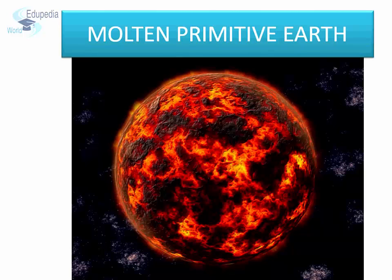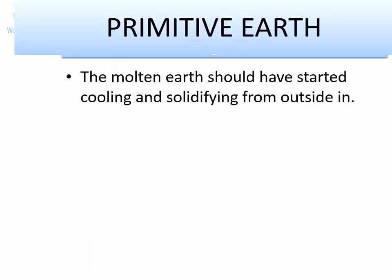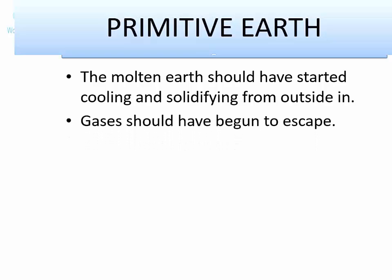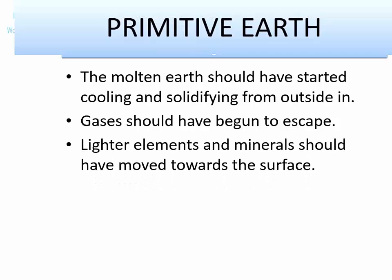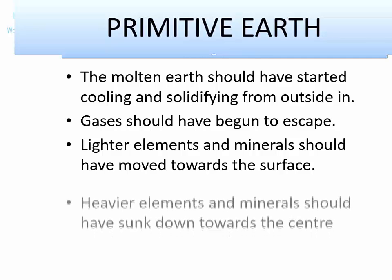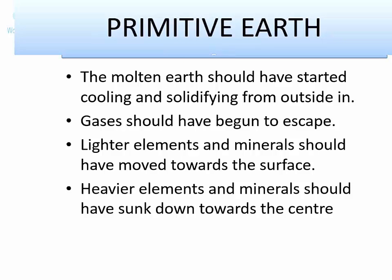Beginning with the assumption that the primitive Earth was in a molten state about 4.7 billion years ago, the following processes should have happened simultaneously: the molten Earth should have started cooling and solidifying from outside in; gases should have begun to escape; lighter elements and minerals should have moved towards the surface; and heavier elements and minerals should have sunk down towards the center.